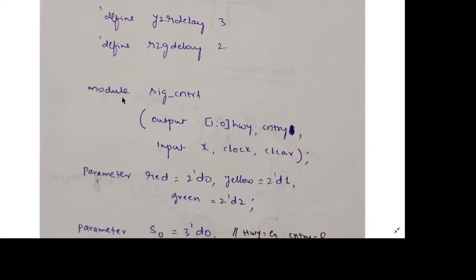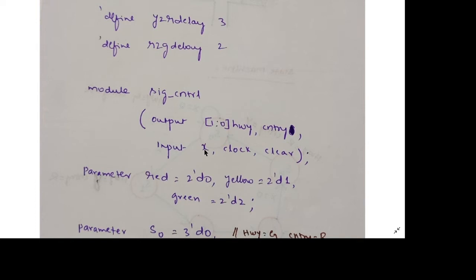Now we are entering the module part, which defines the external interface signals of the signal control unit. The output will have 2 bits for highway and 2 bits for country — representing red, green, or yellow for each road. The input will have 3 signals: x from the sensor (0 means no vehicles on the side road, 1 means vehicles are lined up), clock to determine delay timing, and clear to reset the system.